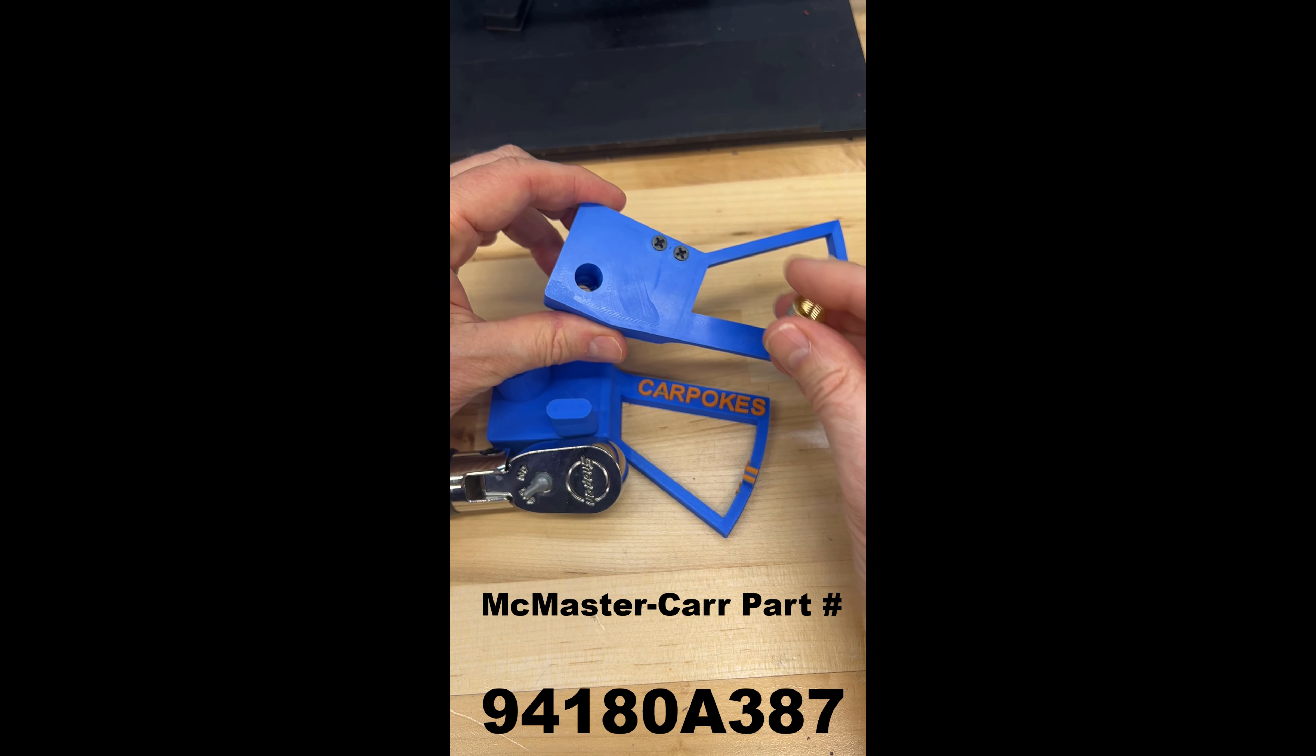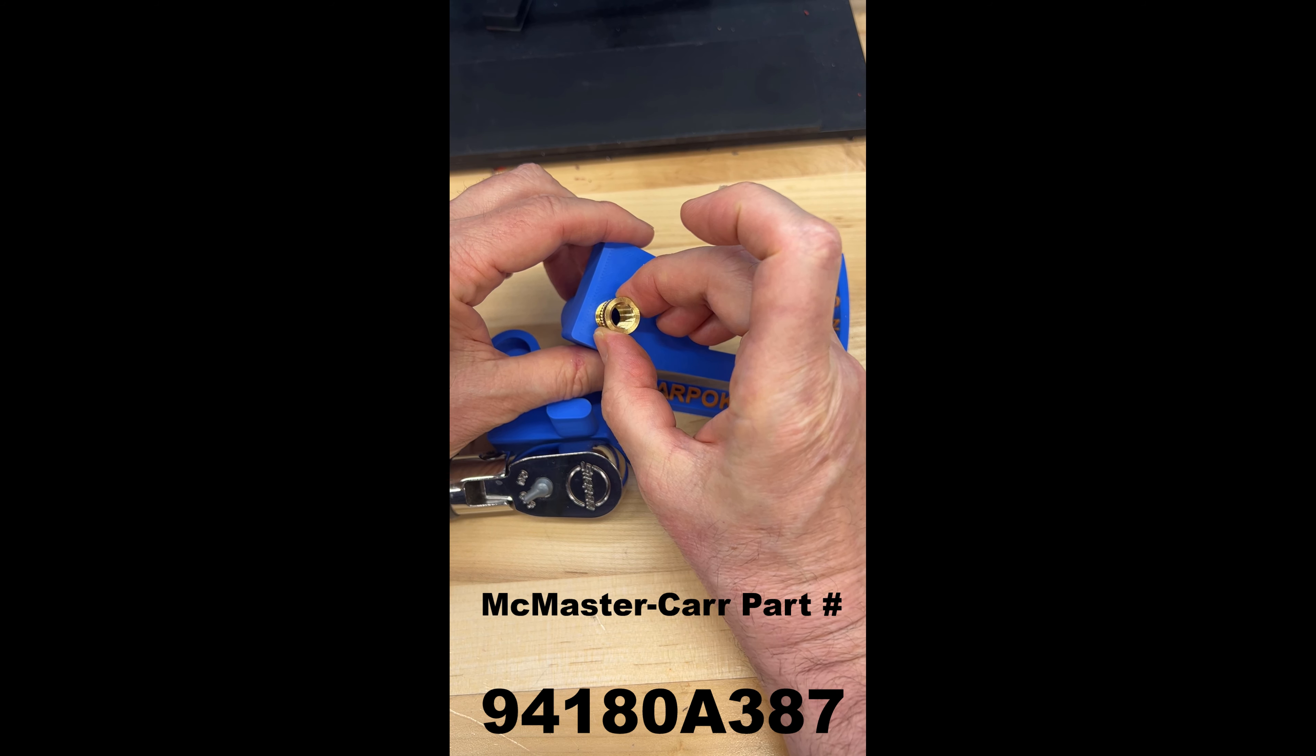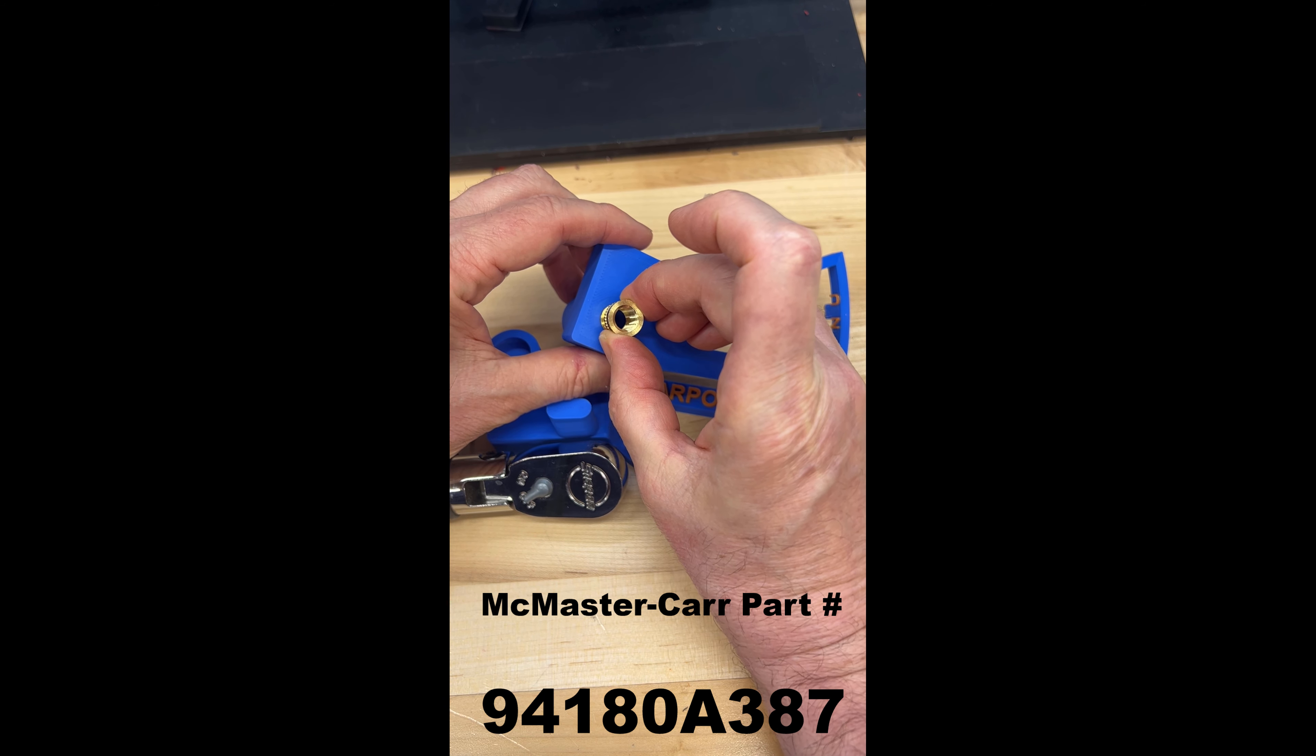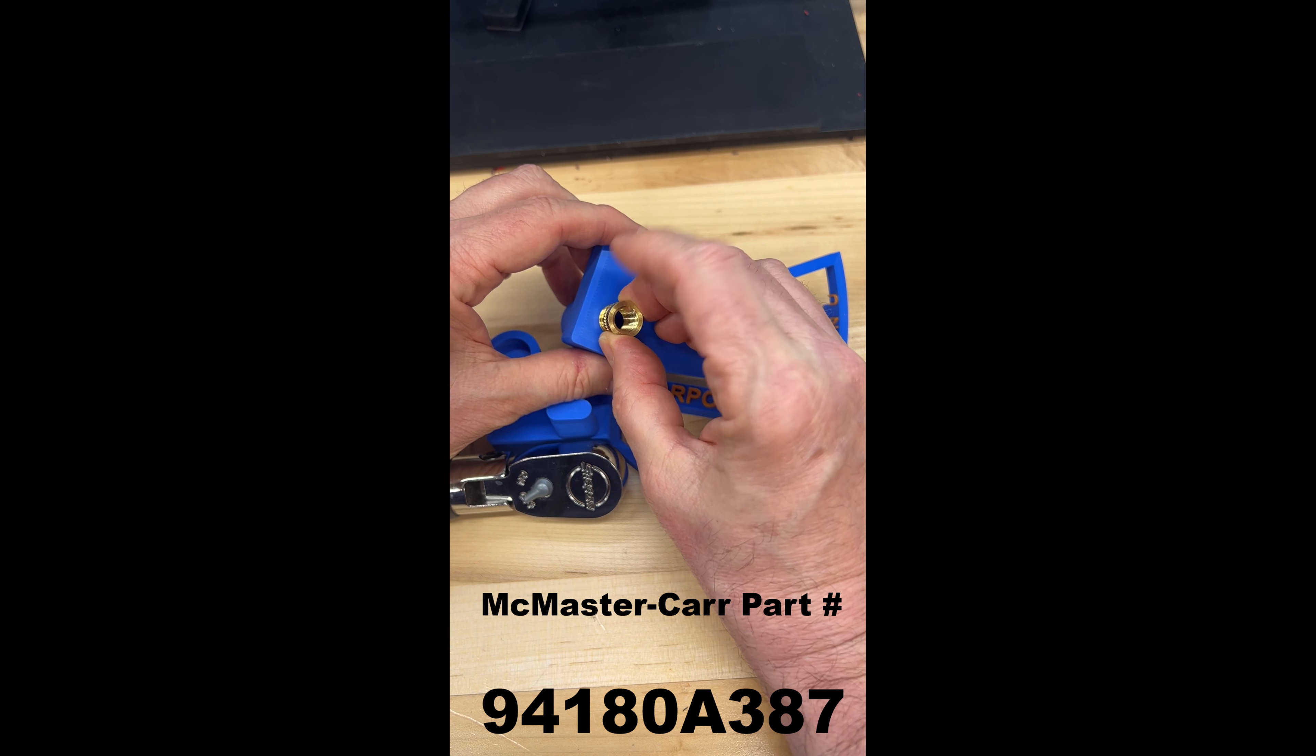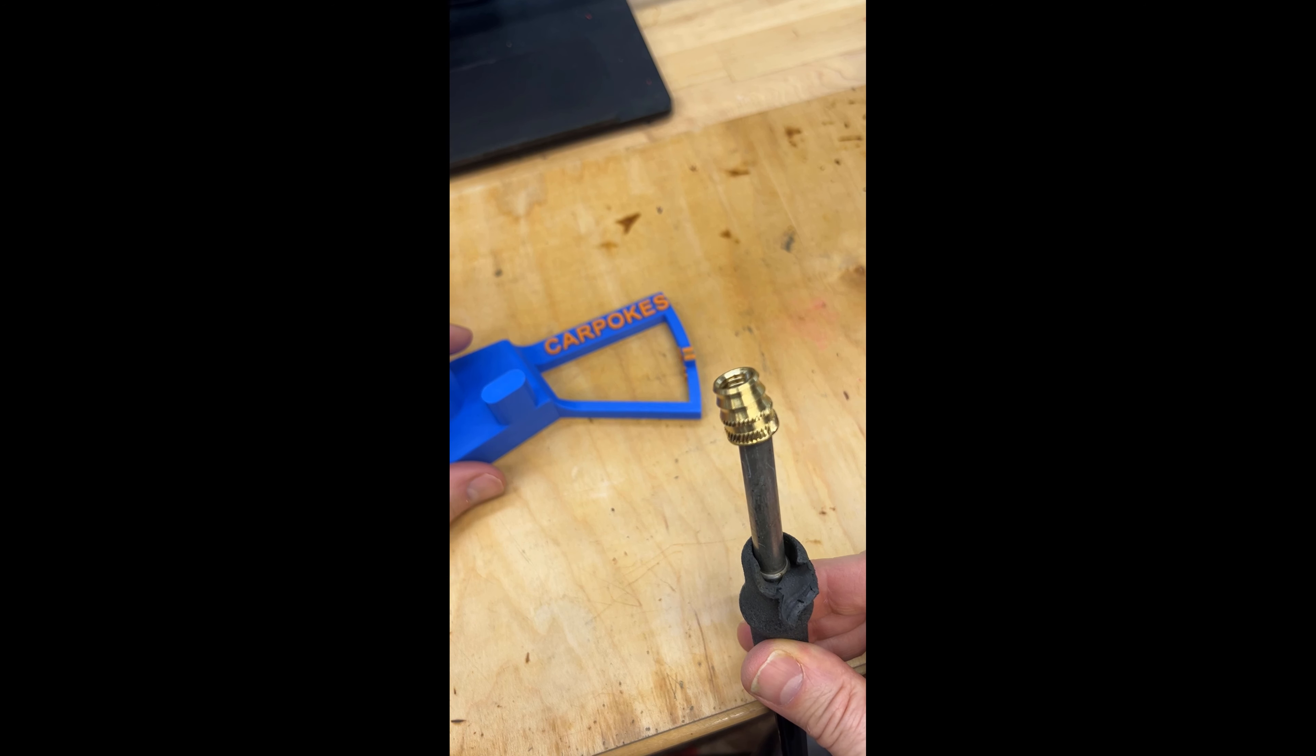And that hole is there because what you do is put this set of metric threads into the hole using a soldering iron. It melts in. So you just let the insert sit on the end of the hot soldering iron for a minute or two.